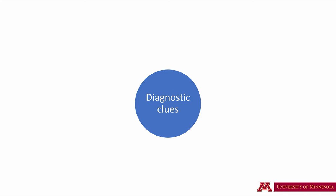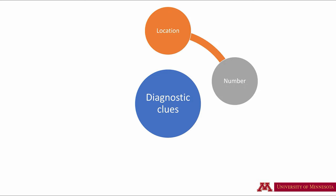If you employ a good system, diagnosing soft tissue calcification is rather simple. Most important in the diagnostic process is to identify the location of the calcification. You will be able to rule out many types of calcification only by the location. Some calcifications are solitary while some others are multiple. This is also an important clue in the diagnostic procedure. The shape of the calcification also provides an important clue to the diagnosis.